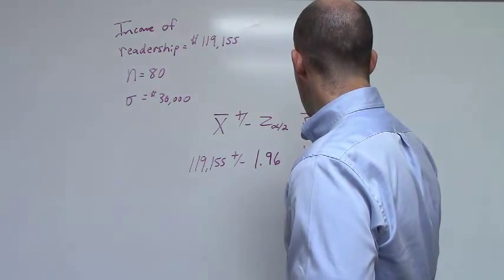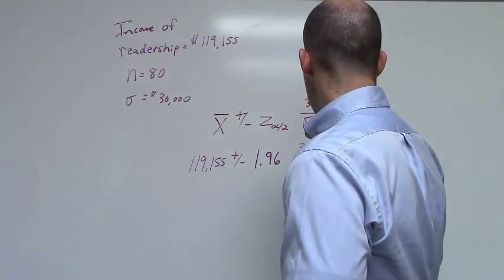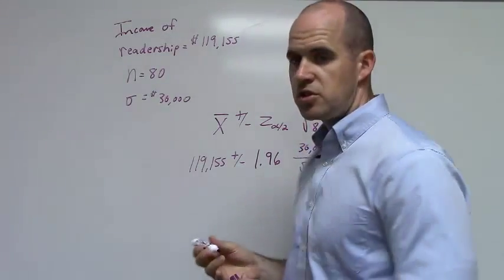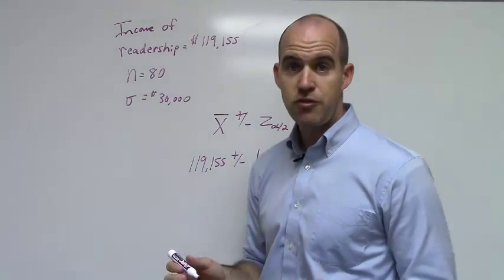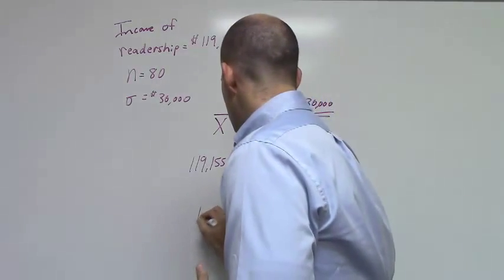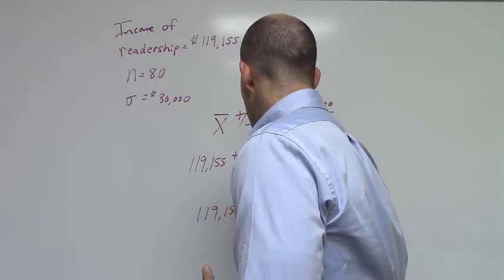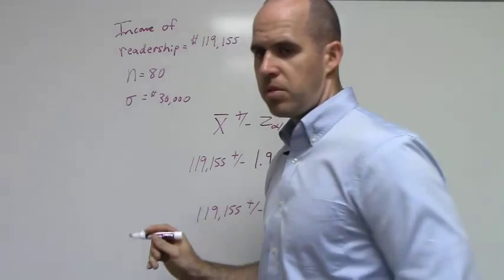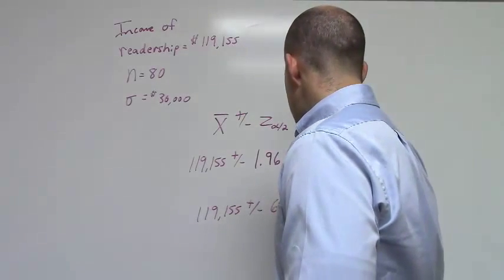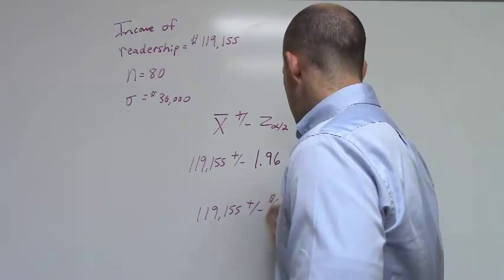And then of course we're multiplying this by our standard error. If you were to do this, you'll find that the value that you get is $119,155 plus or minus $6,574.